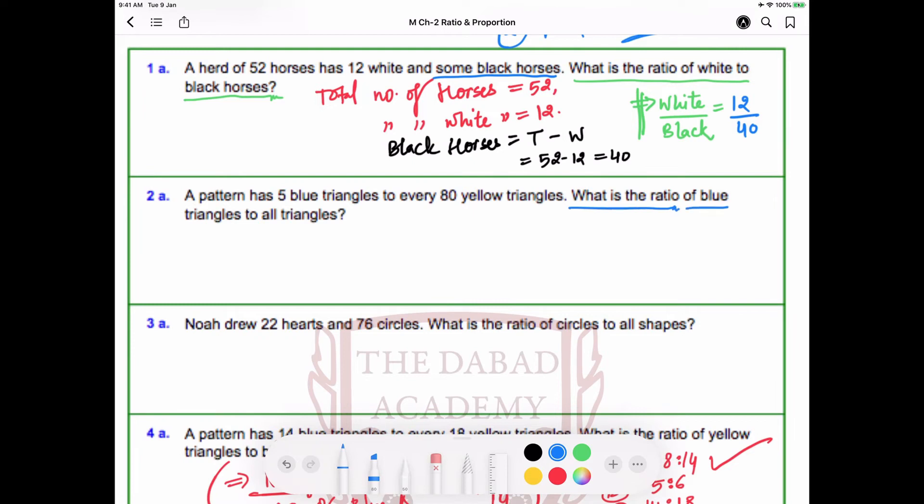We are given there are 5 blue triangles. All triangles means total number of triangles. So total number of triangles would be the number of blue triangles plus yellow triangles. Number of blue triangles is 5 and yellow triangles is 80, so total number of triangles equals 85.